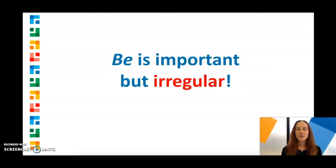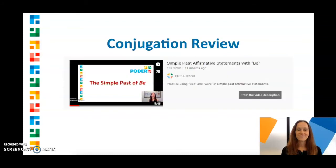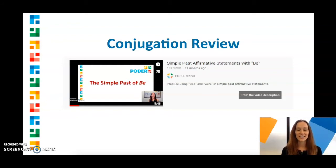Be is a super important but also irregular verb in English, so it doesn't always follow the same patterns that other verbs do. If you want to review the conjugations of be in both the present and the past, we also have a video about that. There should be a link to it right up there — if you want, you can watch it after this one.